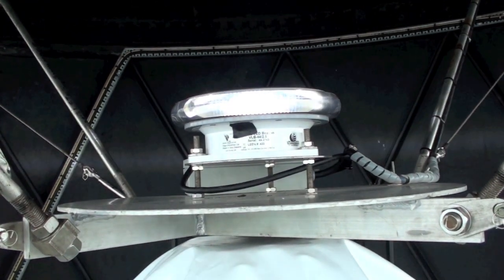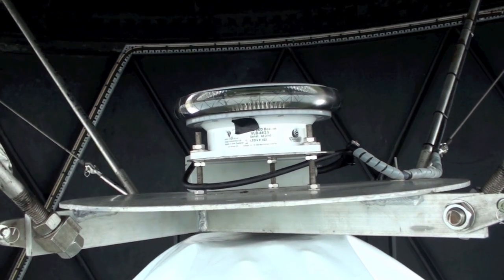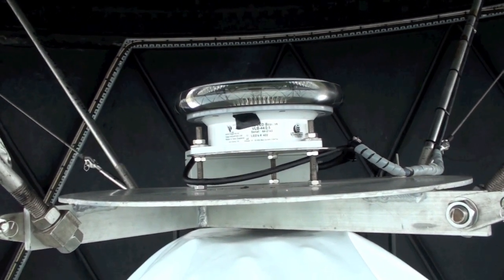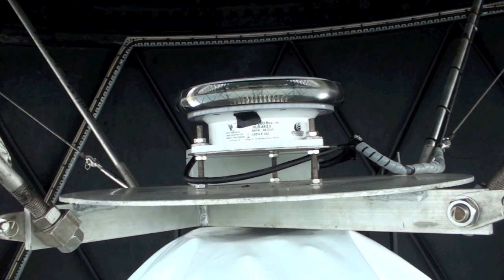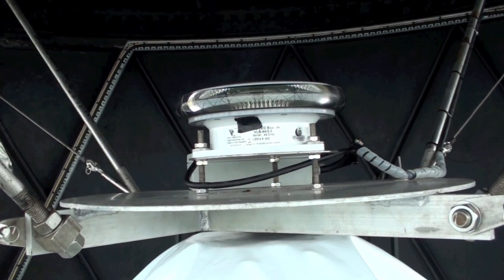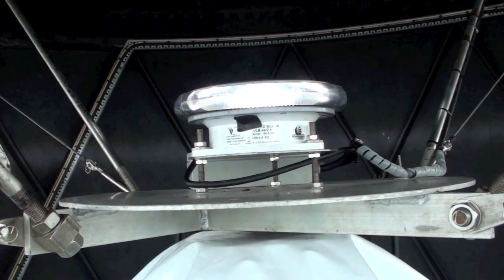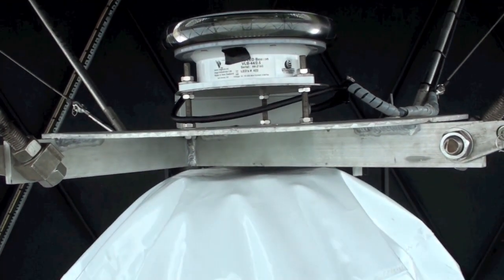The new light does not revolve but flashes at the same characteristic as the old lamp, once every 10 seconds. It operates only during the hours of darkness and is automatically controlled by a photocell.